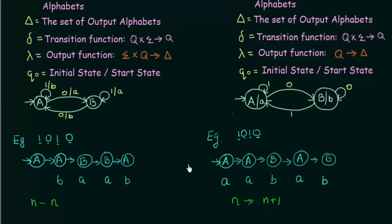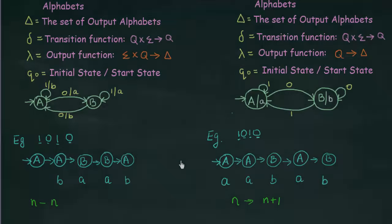So that was about the Mealy machine and Moore machine, which are the finite automata with outputs. We will be seeing more examples in the next lecture.